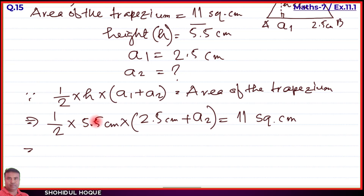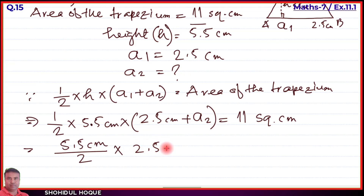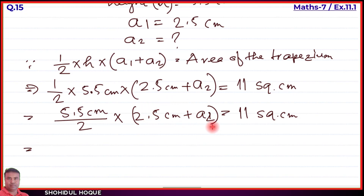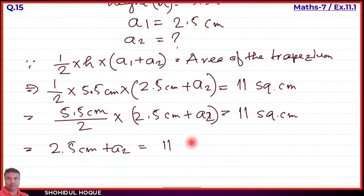Transposing the ½ to the right-hand side: 5.5 × (2.5 + a2) = 11 × 2. Then transposing 5.5 to the right-hand side gives: 2.5 + a2 = (11 × 2) ÷ 5.5, which simplifies as we divide both sides by 5.5.